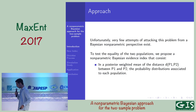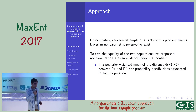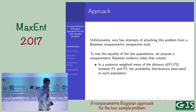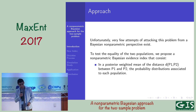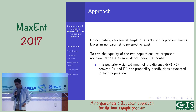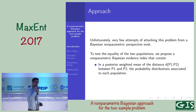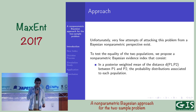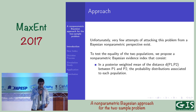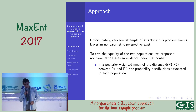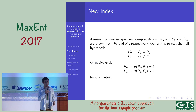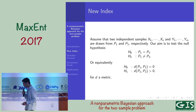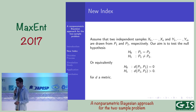Unfortunately, very few attempts at attacking this problem from a Bayesian non-parametric perspective exist. To test the equality of the two populations, we propose a non-parametric Bayesian evidence index that consists of a posterior rate and mean of the distance between the populations. Now assume that two independent samples are drawn from both populations.